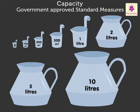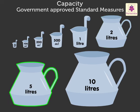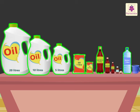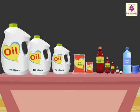There are certain standard measures used to measure the capacity of a liquid. They are approved by the government: 50 milliliters, 100 milliliters, 200 milliliters, 500 milliliters, 1 liter, 2 liters, 5 liters, and 10 liters. Certain liquids in markets are sold in liters and milliliters.